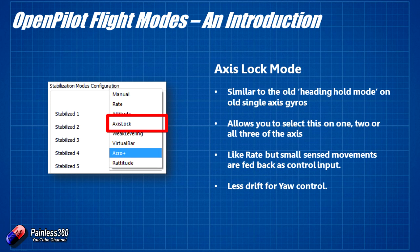Axis lock is really for the yaw setting, or the rudder when it's turning around. It's like the old heading hold mode — similar to rate, but more like a locked-in heading hold mode that we used to have on helicopters. Rather than just using the gyro where you'd occasionally have a little bit of drift, it's also sensing that drift to take it out of the equation and keep everything absolutely lock solid. I only ever tend to use this on the rudder; for the other two axes I tend to use one of the other modes.